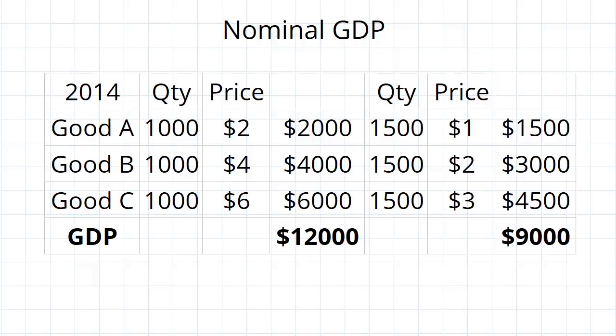Economy two, on the other hand, keeps the same prices, but the quantities all have a 50% increase, which means there's a 50% increase in the GDP.